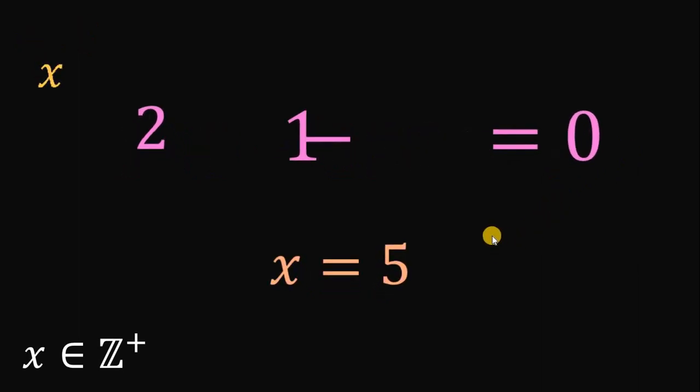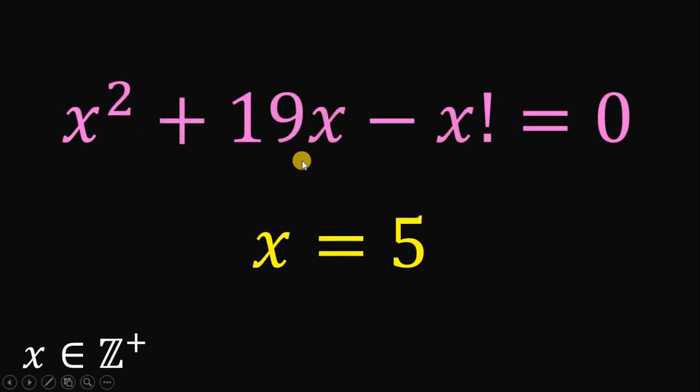Therefore, the value of x in this equation, x squared plus 19x minus x factorial equals 0, is equal to 5. And as always, we are done.